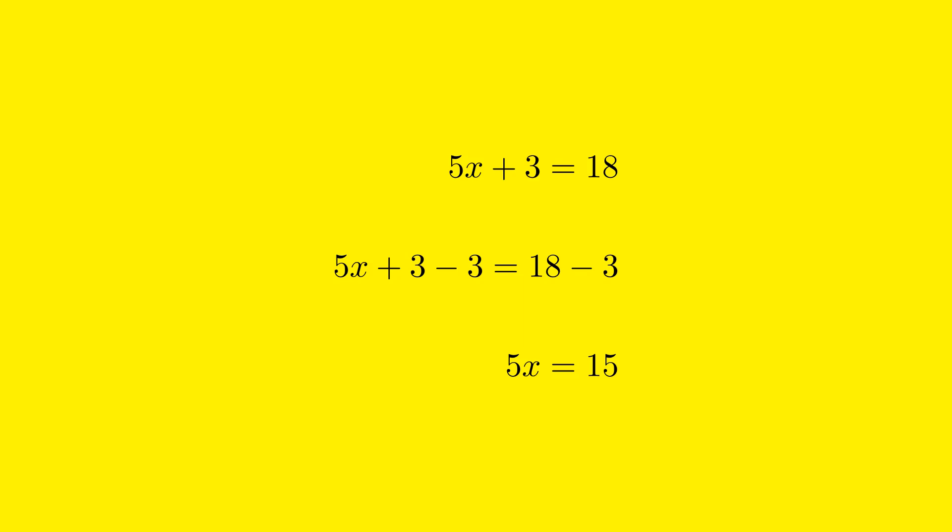To remove the 3, we perform the opposite operation, which is subtraction. So we subtract 3 from both sides of the equation. Starting with the original equation, 5x plus 3 equals 18.